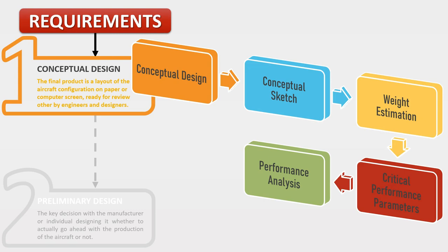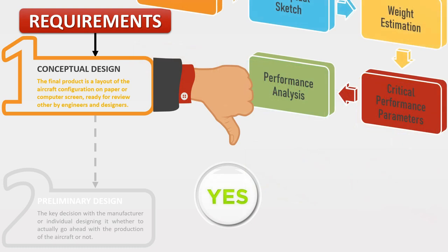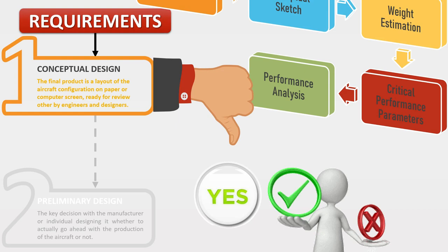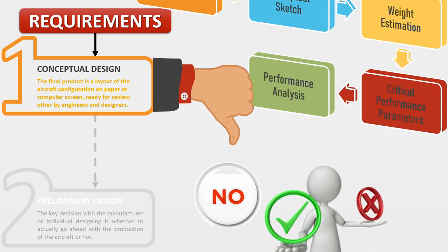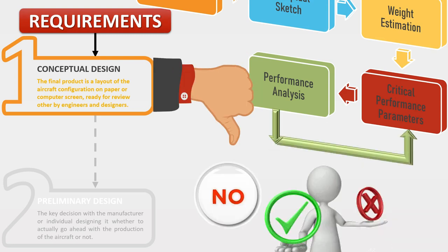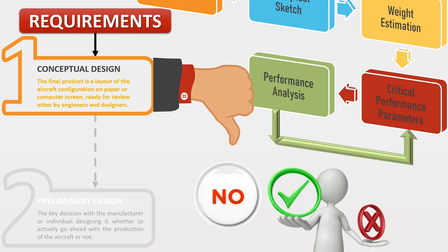Based on the configuration layout, estimation of aircraft weight is done. An aircraft is a combination of wing, engine, fuselage, tailplane, payload, and fuel weight. From this, we find the critical performance parameters of the aircraft — aerodynamic efficiency, wing loading, and thrust loading — and then perform a performance analysis to check whether the design meets or exceeds the requirements.